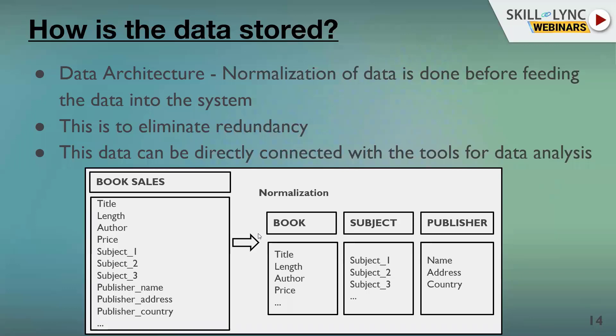Normalization ensures the database takes up minimal disk space and is memory-efficient. This is the complete process — picking up data from a source, manipulating it, storing it for historical purposes, and later connecting it for analysis.